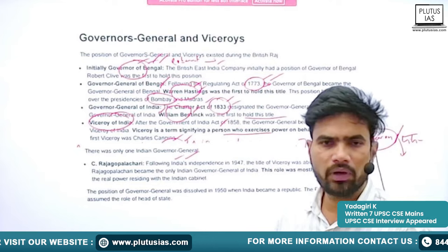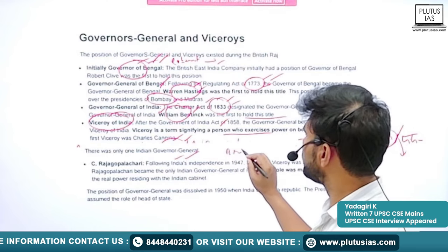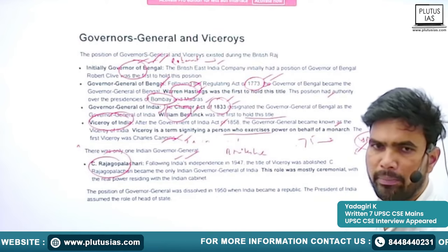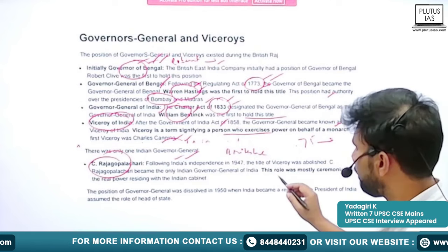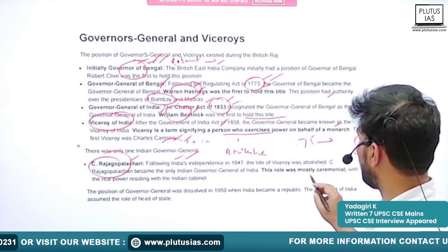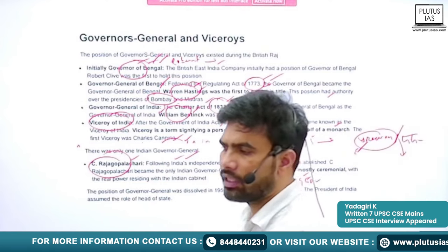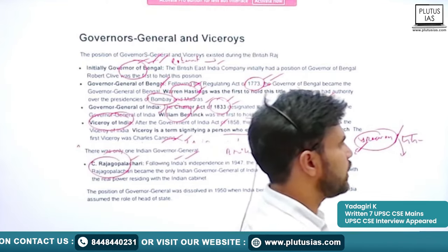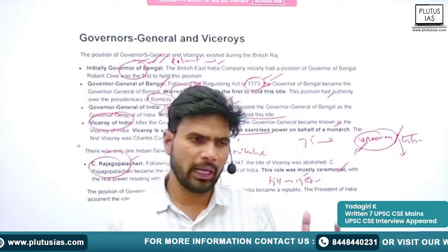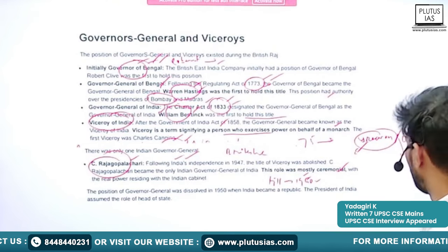There was effectively only one Indian Governor General — Rajagopalachari — after India achieved independence. He was Governor General until India declared itself a republic in 1950, once the constitution was adopted. That position was a ceremonial one; the actual power was in the Prime Minister and the cabinet headed by the Prime Minister.